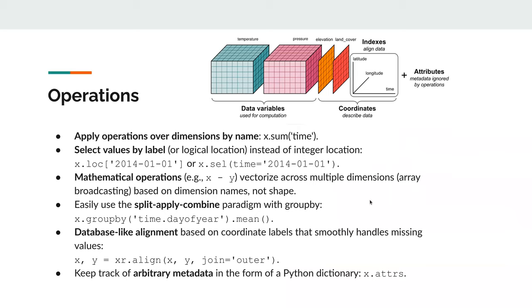By having these labels, you get useful operations for free on your datasets. You can operate over named dimensions — for instance, you can do mean over 'time' instead of figuring out which axis encodes your time. You can select values by labels — if you know a certain date, you just say 'give me the values for this date' instead of computing the index manually. You also get many mathematical operations that automatically vectorize and broadcast over dimensions, which solves a lot of the pain from MATLAB and NumPy.